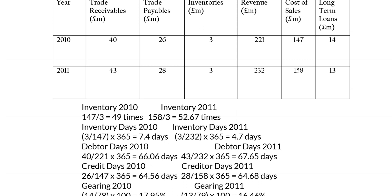Debtor days in 2010 are 66.06 days, but in 2011 they are 67.65 days — so in 2011 debtors are slightly less efficient. Creditor days in 2010 are 64.56 days and in 2011 are 64.68 days — also slightly less efficient. However, comparing both years, debtor days are still higher than creditor days, meaning cash flow is tight but shouldn't be facing major problems.